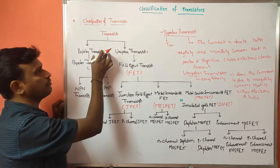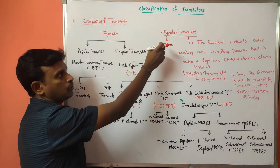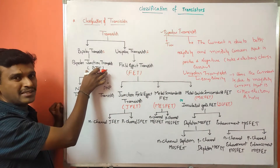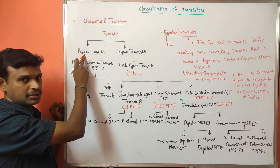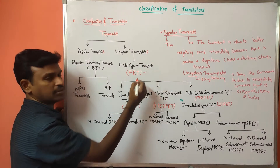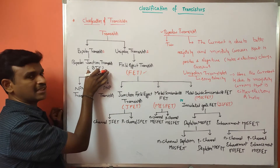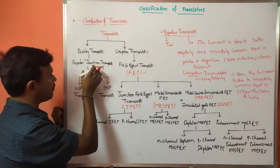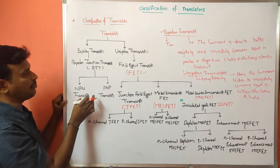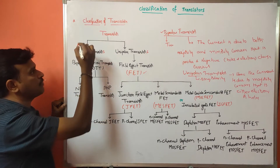So this is the basic classification: bipolar transistors and unipolar transistors. Under bipolar transistors we have the bipolar junction transistor, that is BJT. This BJT can be classified as two types: NPN transistor and PNP transistor.